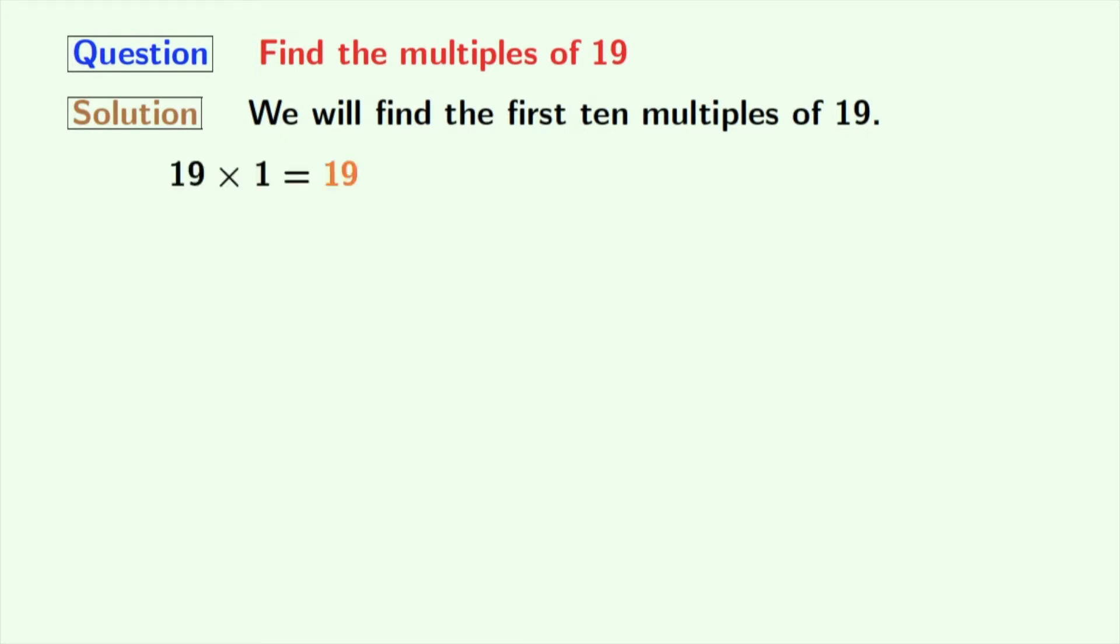Multiplying 19 with 1, we get 19. Multiplying 19 with 2, we get 38. Multiplying 19 with 3, we get 57.